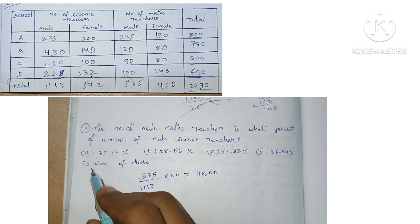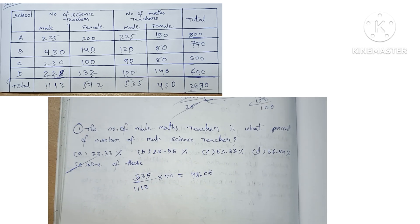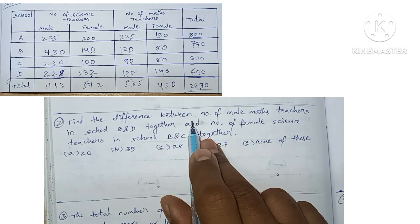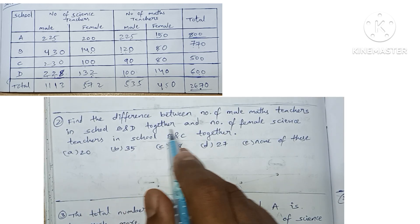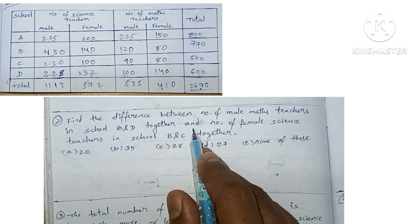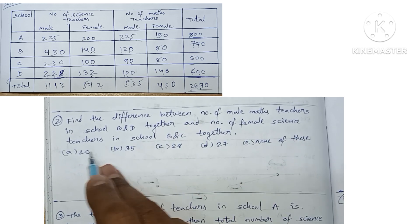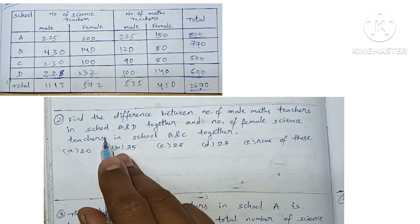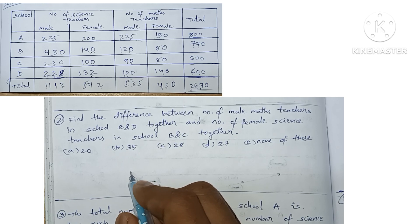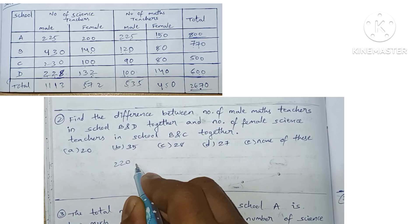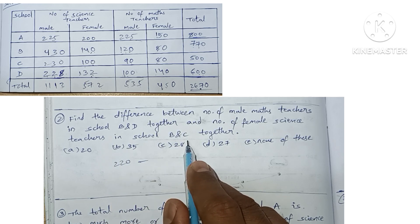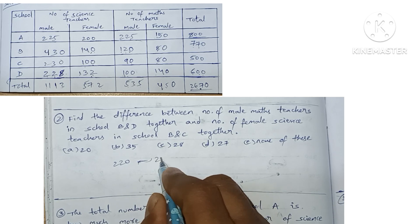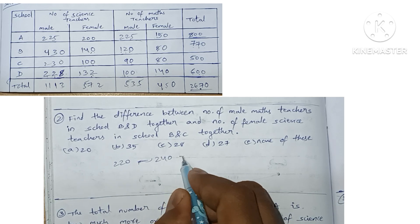Question 2: Find the difference between the number of male math teachers in schools B and D together and the number of female science teachers in schools B and C together. Male math teachers in B and D together = 120 + 100 = 220. Female science teachers in B and C = 140 + 100 = 240. Difference = 240 − 220 = 20. Option A is the answer.